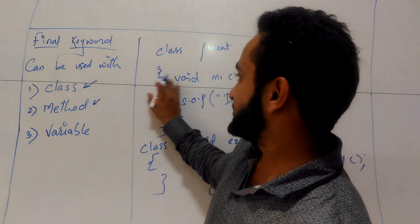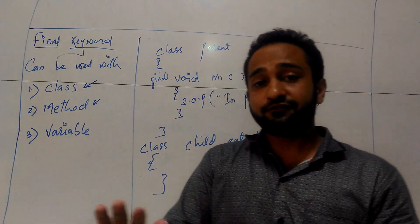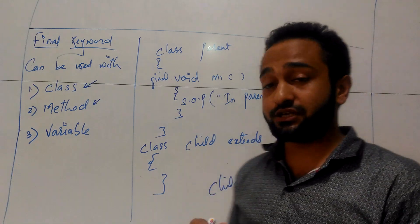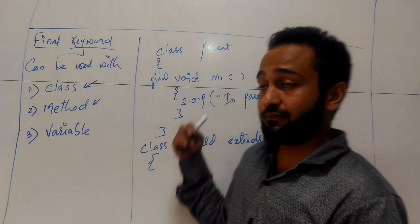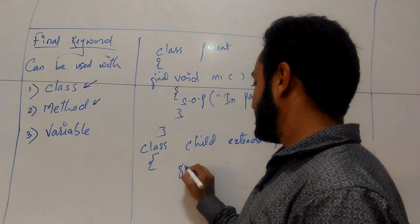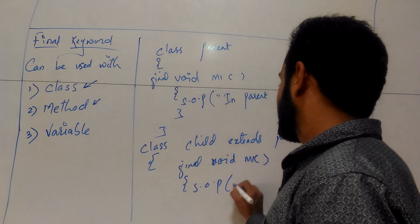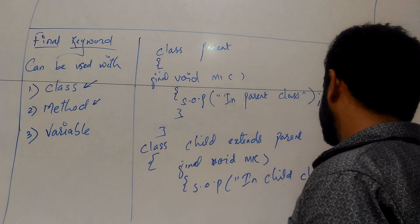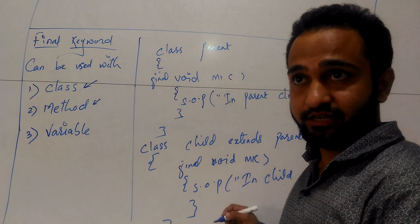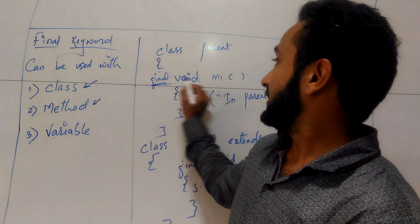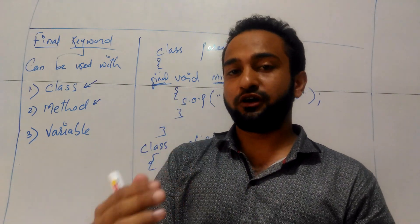But suppose if I make the m1 method in the parent class as final, and I run the program calling c.m1(), it will still get printed — "in parent class" — because the method is inherited and I haven't changed it. However, if I try to override it in the child class by writing void m1 with System.out.println "in child class", I will get an error: the final m1 method in parent is final and cannot be overridden. So if you define any method as final, it will get inherited but you cannot modify or override it.